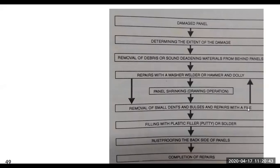After removal of small dents and bulges, you can do repairs with a file — if there are parts that need to be smoothed out. Then you do filling with plastic filler, putty, or solder at locations where it is not possible to take out dents — material is added. After this, you can do rust proofing on the back side of the panels by adding a layer of paint or another coating. Once rust proofing is completed, you finalize completion of the repairs.